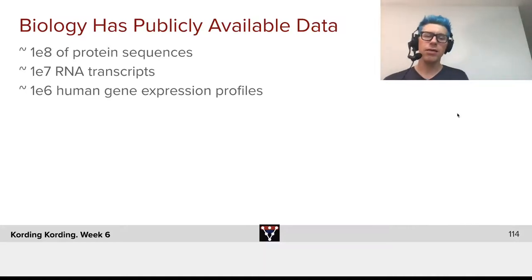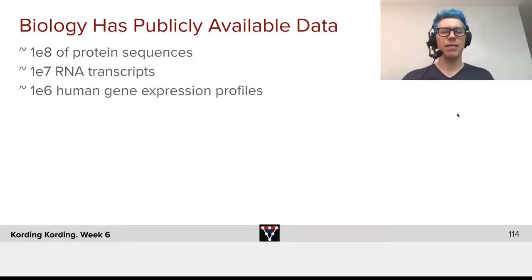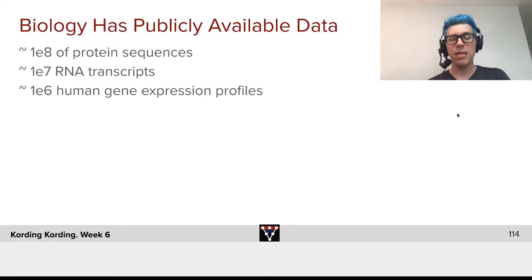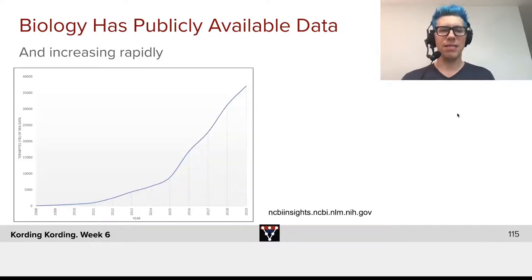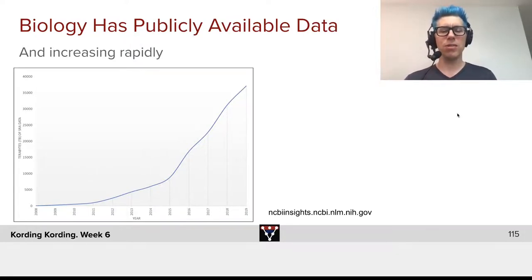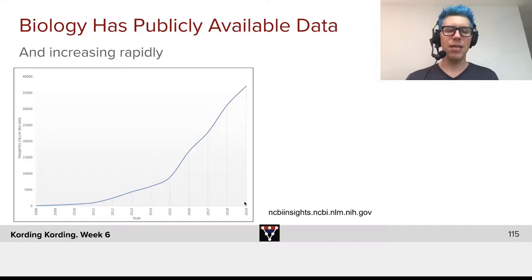Another application of convNets is in biology. Biology has lots of publicly available data — on the order of 10 to the 8 different protein sequences, 10 to the 7 RNA transcripts, 10 to the 6 human gene expression profiles, and so on. From biology, we have these massive data sets that are truly important and may hold the clues to how we should better treat people when they have a disease. The amount of that data is very rapidly increasing. Here you can see the amount of terabytes of SRA data — an important data type in biology — growing over time.